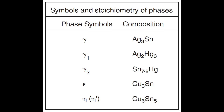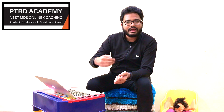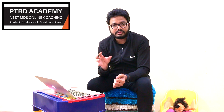Moving to the final question: epsilon phase in amalgam refers to which of the following. In Phillips, the various phase symbols and compositions are: gamma represents Ag3Sn, gamma-1 represents Ag2Hg3, gamma-2 represents Sn7-8Hg, epsilon represents Cu3Sn, and eta represents Cu6Sn5. These are the symbols and stoichiometry of amalgam phases. It is only by making notes and through repetition that you can master these memory-based topics.